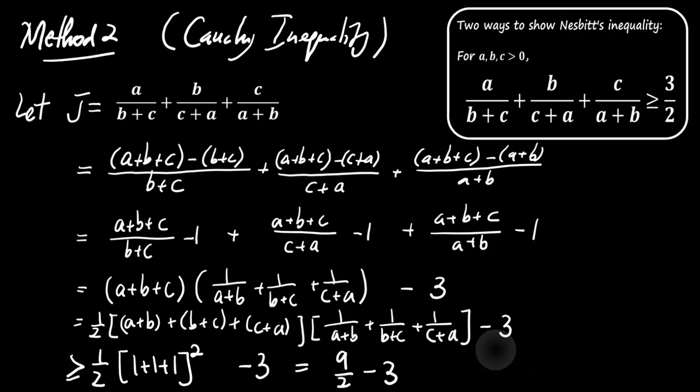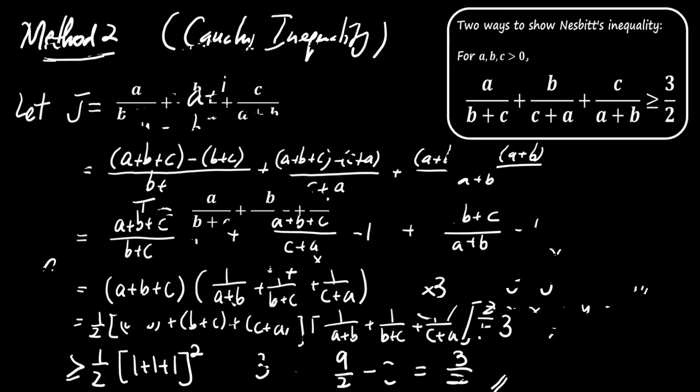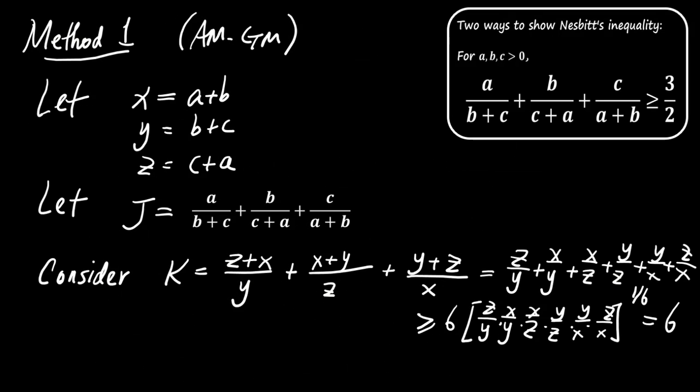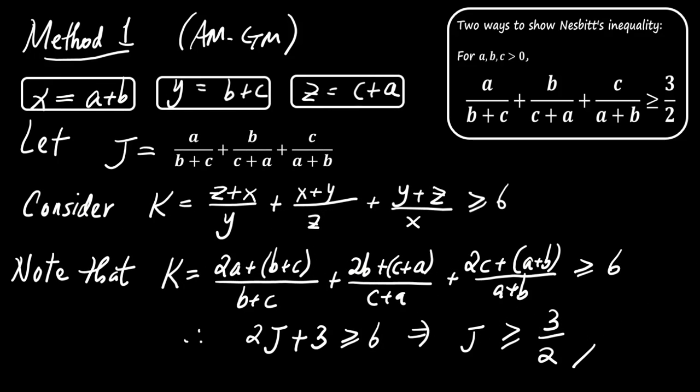J is greater than or equal to 9 over 2 minus 3, which simplifies to J is greater than or equal to 3 over 2. And that completes the proof using Cauchy-Schwartz. Thank you for watching. Be sure to subscribe for more math videos.